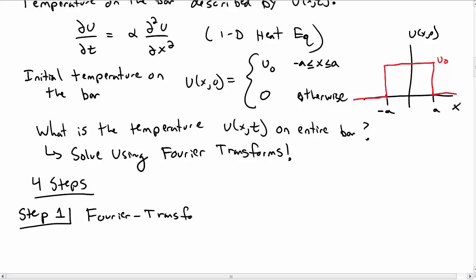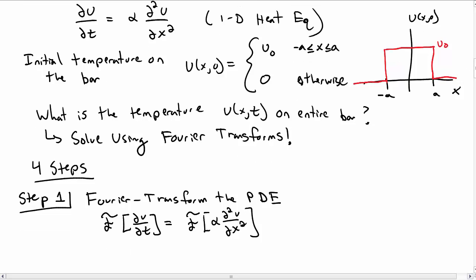The first is we take a Fourier transform of the partial differential equation that we're interested in. So our differential equation above we take a Fourier transform of that, so we Fourier transform du dt and that's equal to the Fourier transform of alpha d squared u dx squared.